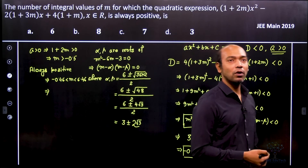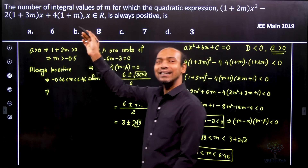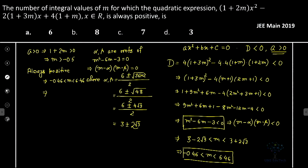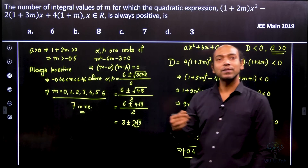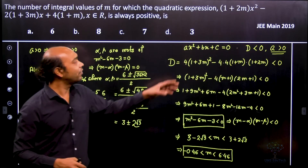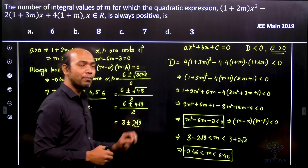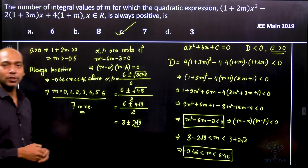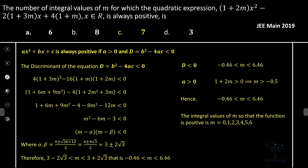So the function is always positive when −0.46 < m < 6.46. We are looking for integral (integer) values of m in this range: m = 0, 1, 2, 3, 4, 5, 6 — that's seven integer values. Therefore there exist seven integral values of m such that the given equation is always positive. Option C is the correct answer.